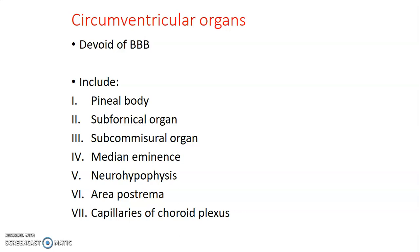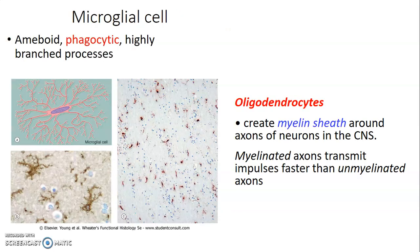Microglial cells are members of the monocytic phagocytic system and are therefore mesodermal in origin. They are amoeboid, highly branched, and their main role is phagocytosis.